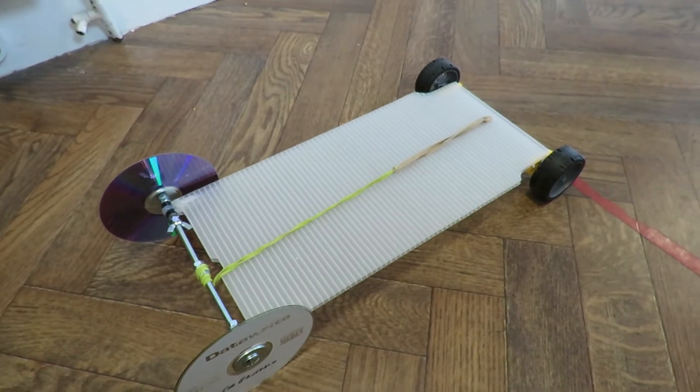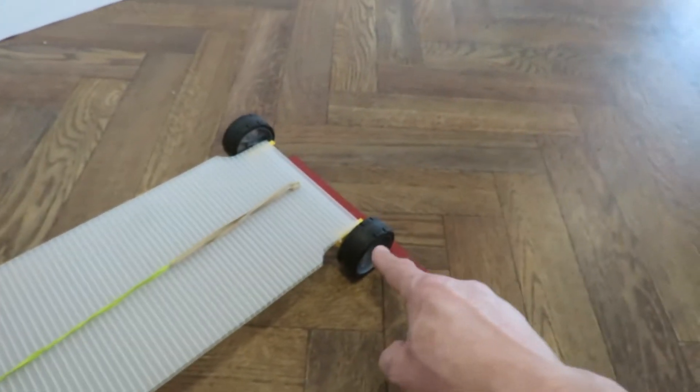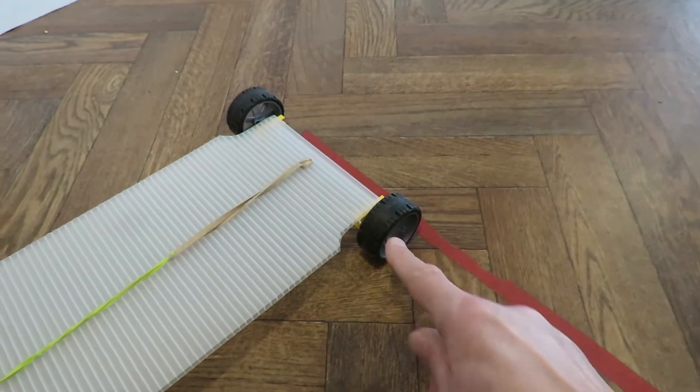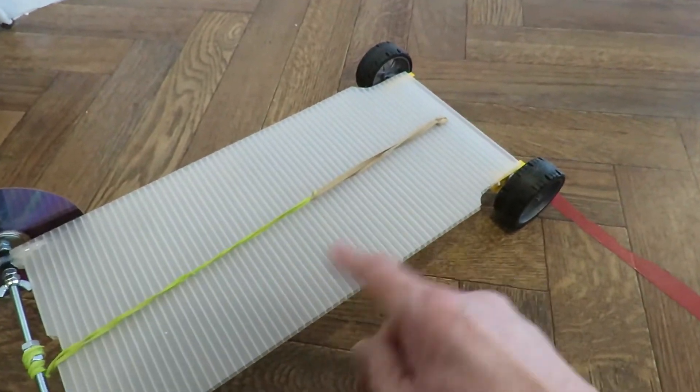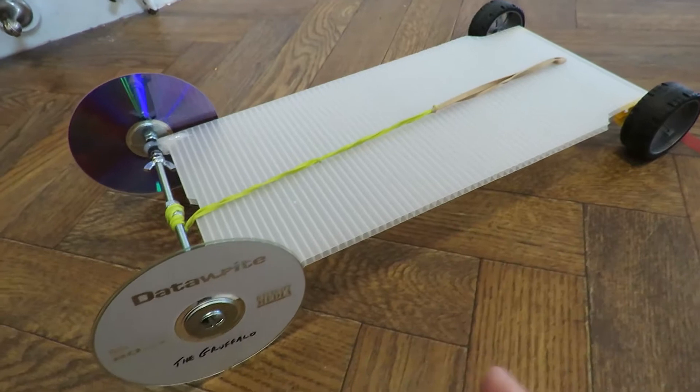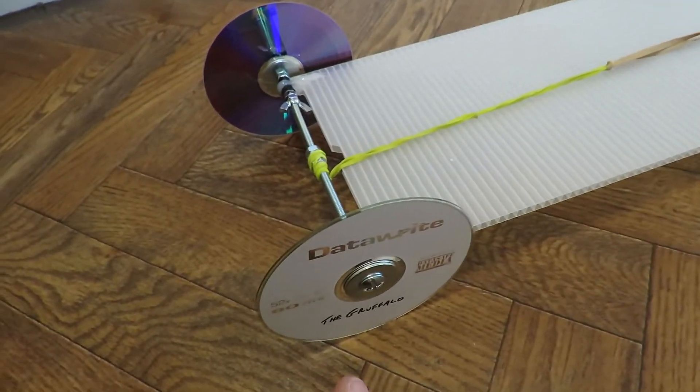I've just used odd bits and pieces. The wheels at the front are K'nex. It's just a bit of plastic. CD wheels.